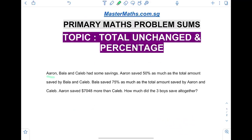Aaron, Bala, and Caleb had some savings. Aaron saved 50% as much as the total amount saved by Bala and Caleb. Bala saved 75% as much as the total amount saved by Aaron and Caleb. Aaron saved $7,048 more than Caleb. How much did the three boys save altogether?